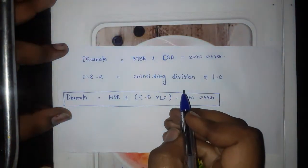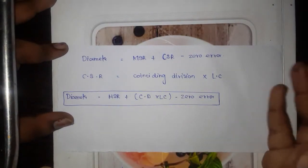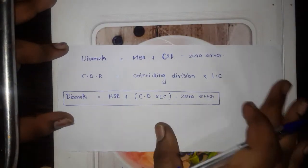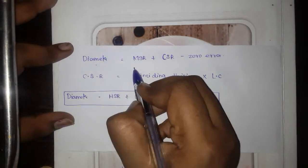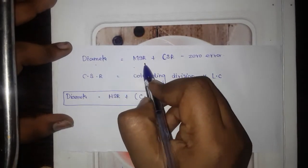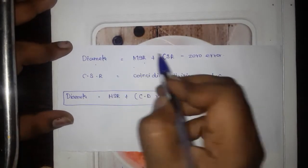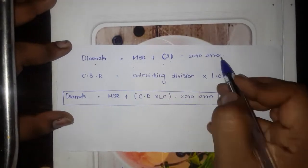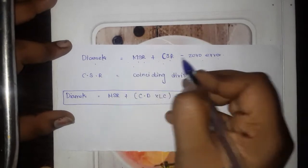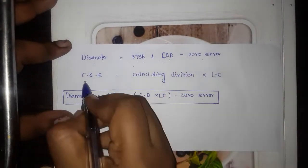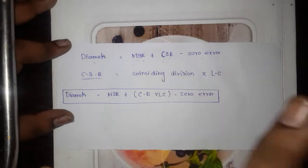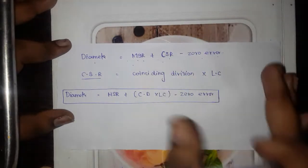Now, the question we will ask is about the diameter of a ball. The formula is: Diameter = MSR + CSR − Zero Error, where MSR is the Main Scale Reading and CSR is the Circular Scale Reading. So: Diameter = MSR + CSR − Zero Error.